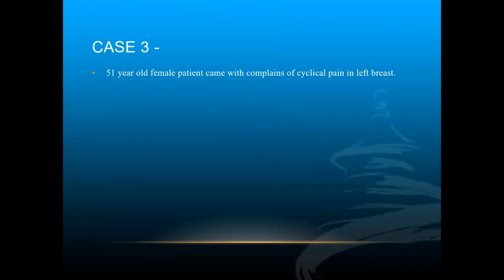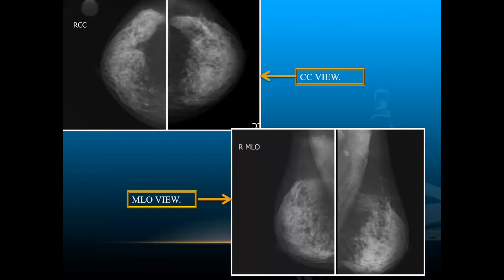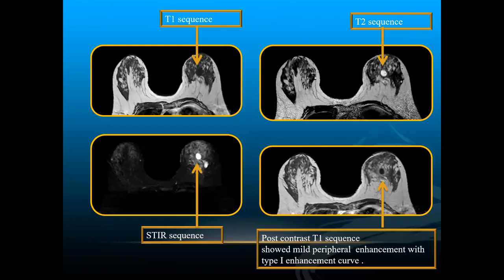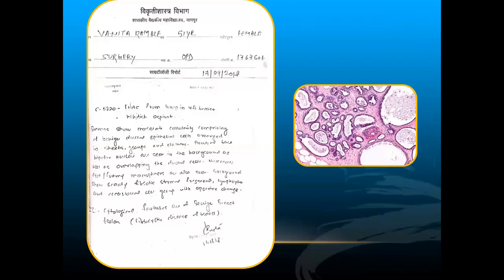Case 3: A 51-year-old female with cyclical pain in the left breast. Mammography showed type C dense breast parenchyma, which was obliterating underlying lesions. On MRI, a well-defined round lesion was noted in the left breast parenchyma — hypointense on T1, hyperintense on T2 and STIR — showing mild peripheral enhancement on post-contrast administration and a Type 1 enhancement curve. HPE correlation confirmed fibrocystic disease, a benign breast lesion.